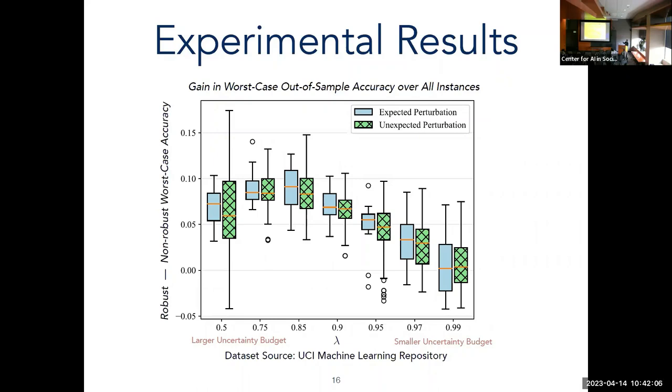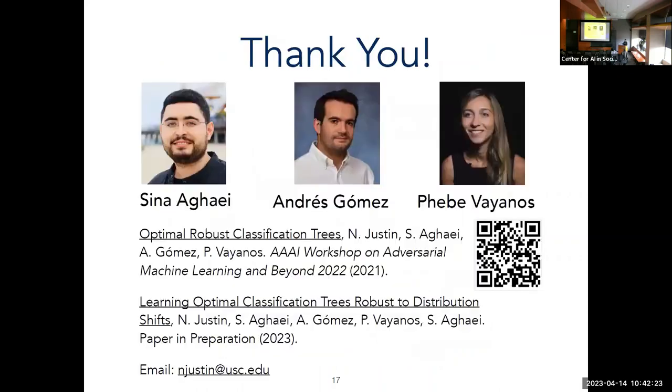And for each pair of plots, we also tried to perturb our data in a way that was unexpected. And as we can see on each pair of plots on the right, we still have a favorable gain in accuracy, even with unanticipated distribution shifts. And so with that, thank you very much. We also have a workshop paper, and we're also working on a journal version. Thank you.